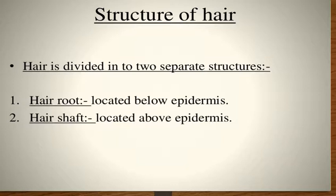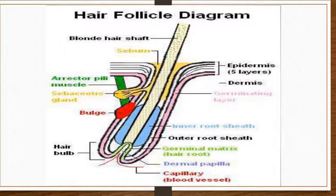The hair root is located below the epidermis, and the hair shaft is the part above it. A diagram shows the epidermis with its five layers, the dermis below it, and the dermal papillae. In the dermis layer, there are two layers: the reticular layer and the papillary layer.